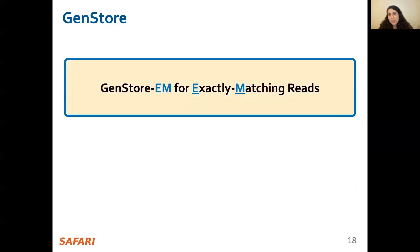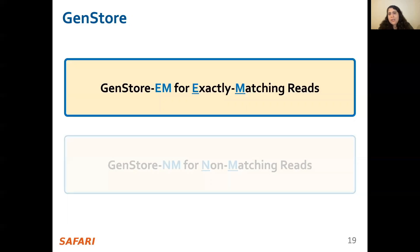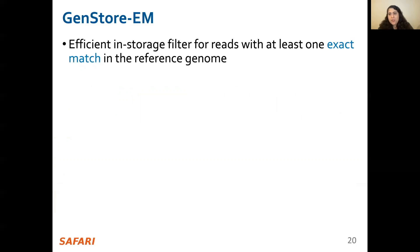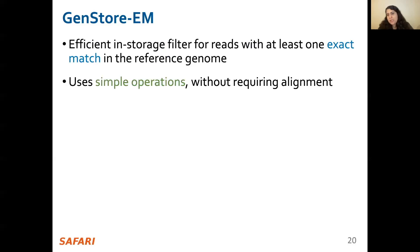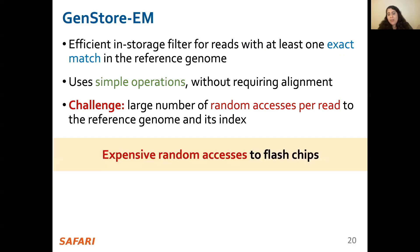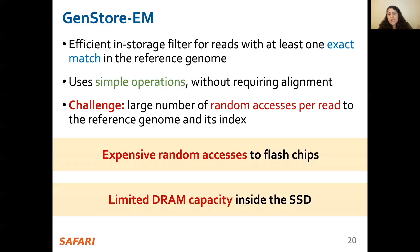By thorough analysis of the mapping process for reads with different properties and different degrees of genetic variation, we design two low-cost in-storage filters: GenStore EM for filtering exactly matching reads and GenStore NM for filtering most non-matching reads. GenStore EM accelerates readmapping by using an efficient storage filter to identify reads that have at least one exactly matching location in the reference genome via simple operations without requiring expensive alignment. The key challenge in designing GenStore EM is the large number of random accesses to large data structures inside the SSD, because NAND flash memory exhibits poor performance for random access reads and there is limited DRAM capacity available in the SSD.